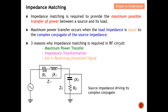There are three reasons why impedance matching is required in RF circuits. Firstly, we want to achieve maximum power transfer — all the power transferred from the source to the load. Next, we also want impedance transformation; for example, we can transform from 50 ohm to 500 ohm. Additionally, impedance matching can aid in rejecting unwanted signals, acting like a filter — passing what you want and rejecting what you don't.